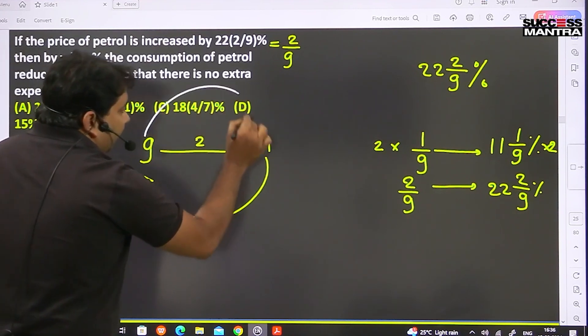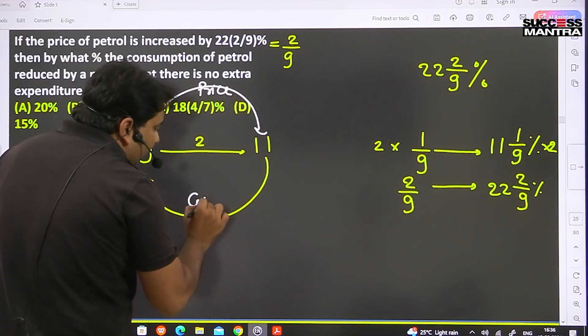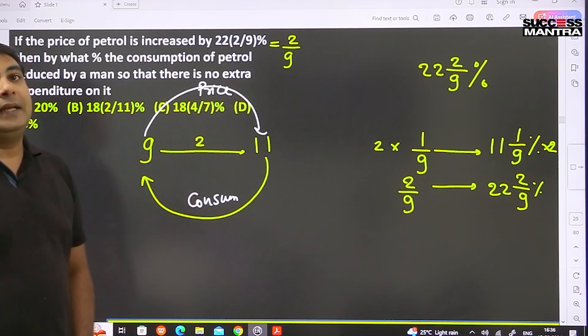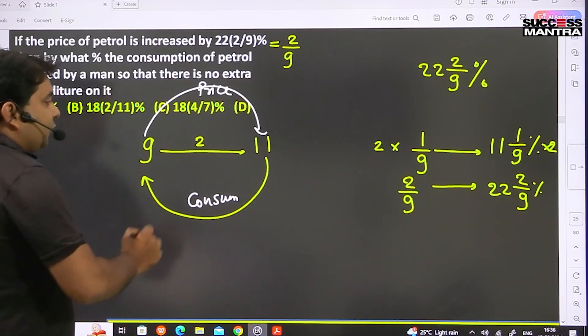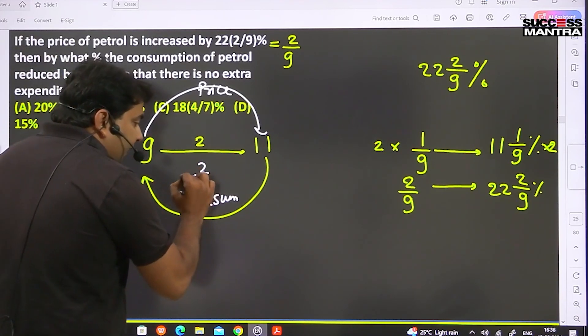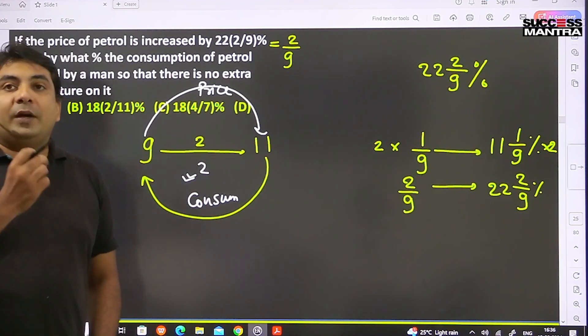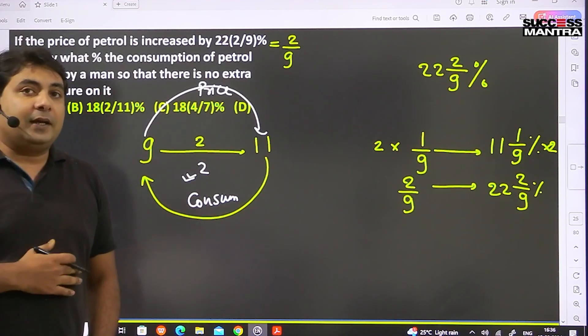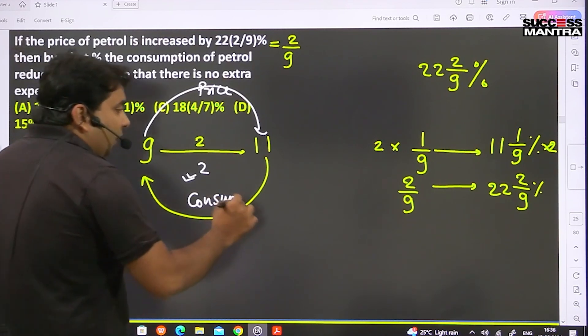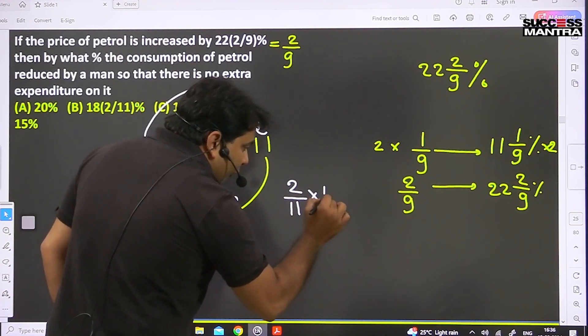How much is it decreasing? Here also 2 is decreasing, but on what base? On 11. The 2 that is decreasing is on base 11. So your answer is 2/11 × 100. What is 2/11 × 100? That is 200/11.